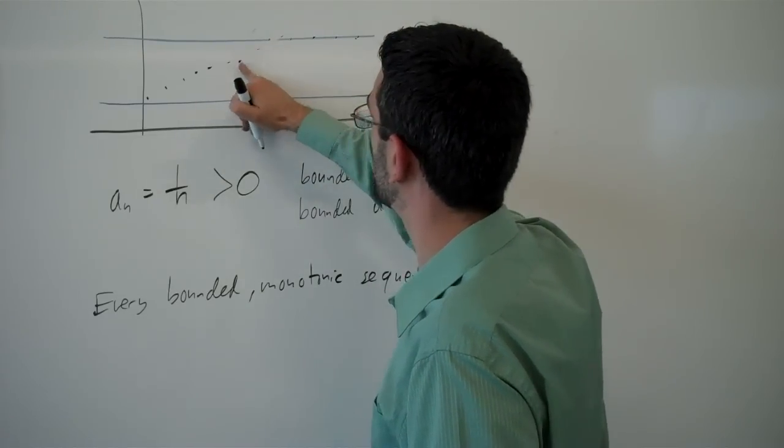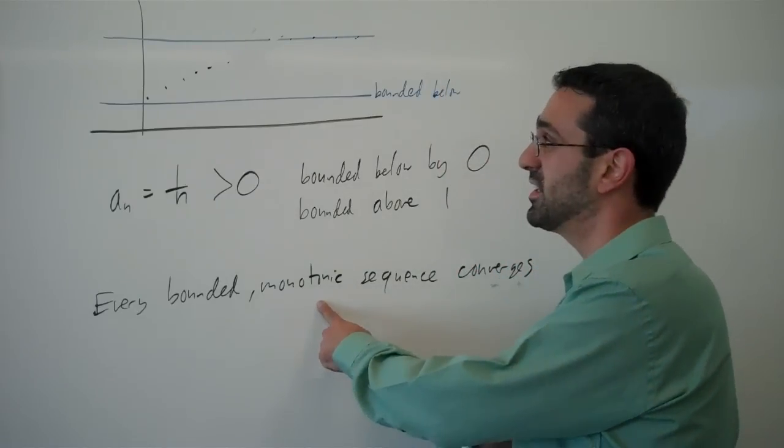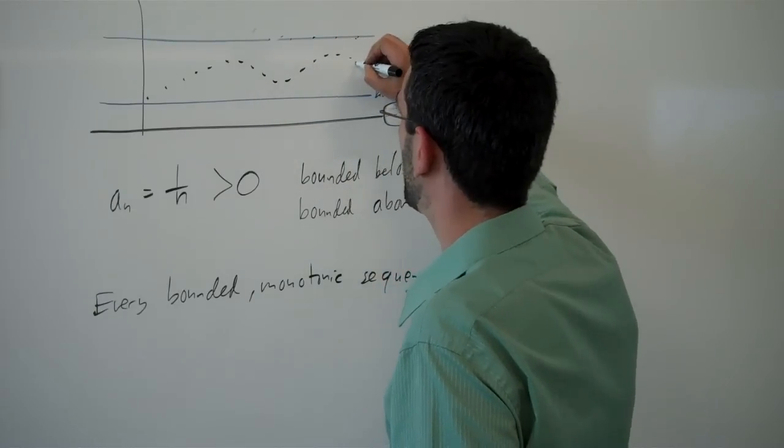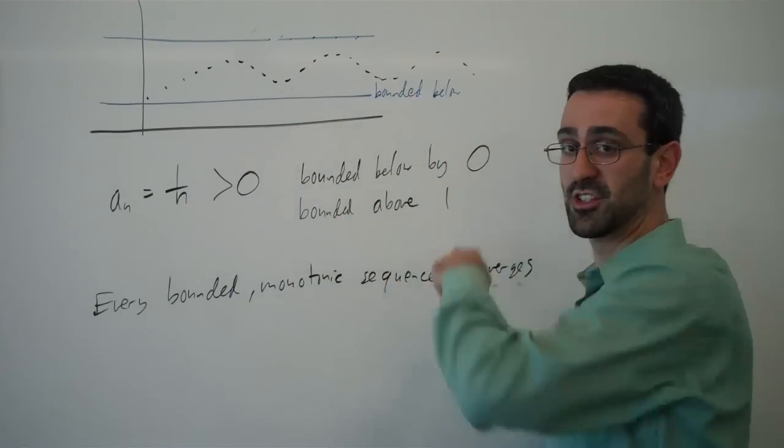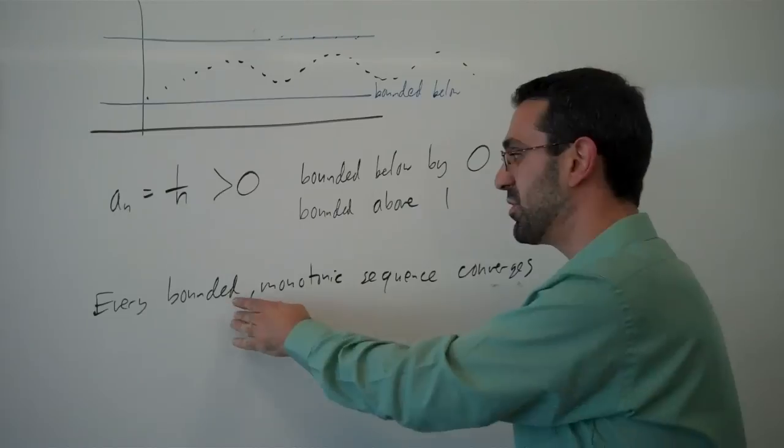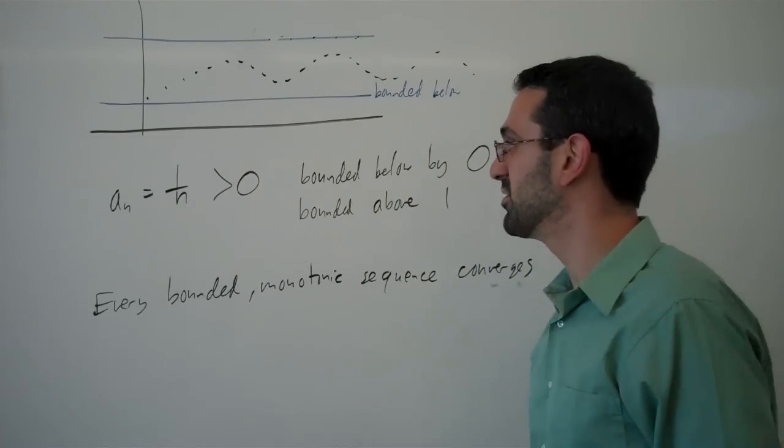If the sequence wasn't monotonic, it could just go up and down forever and ever, and never converge at any value. But if it's both bounded and monotonic, it's going to have to converge.